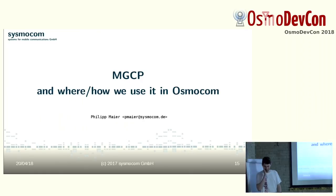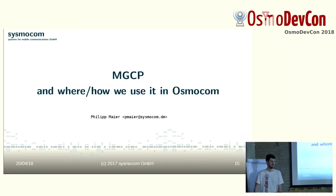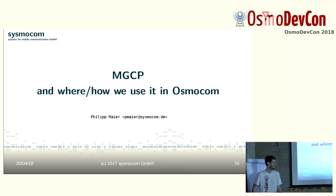I'm through with the first part of my talk. Are there any questions regarding MGCP? One question: is it necessary to have two media gateways if the BSC and MSC are co-located on the same physical hardware — is it strictly necessary to have two media gateways?